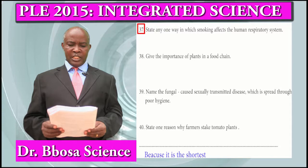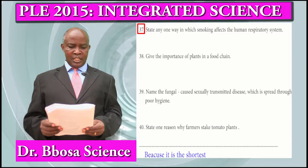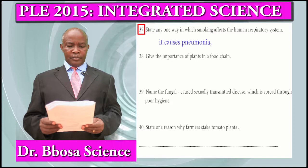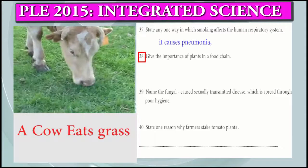Question 37: State one way in which smoking affects the human respiratory system. It causes lung cancer. It causes pneumonia. It damages the lungs.